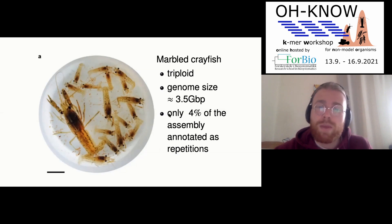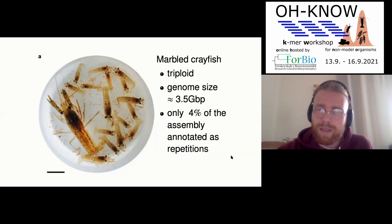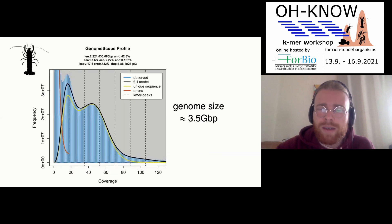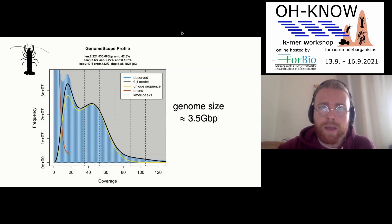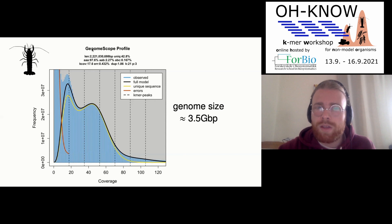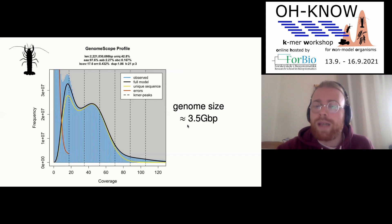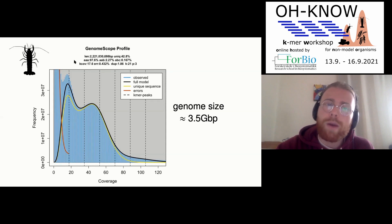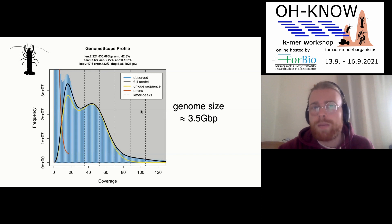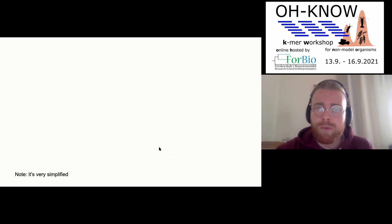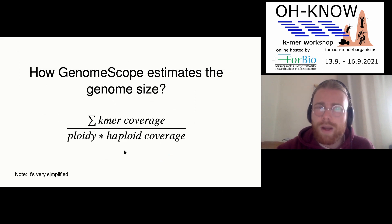The marbled crayfish is a triploid asexual species with about a 3.5 gigabase monoploid genome size. It's kind of silly that only four percent of the assembly is annotated as repetitions, yet the genome is very repetitive. When we naively constructed a GenomeScope model for the species we found we were super underestimating the genome size — it was supposed to be more than three gigabases. There is lots of cytology done on this species so we knew those three gigs were not made up, meaning the GenomeScope genome size estimate was wrong.